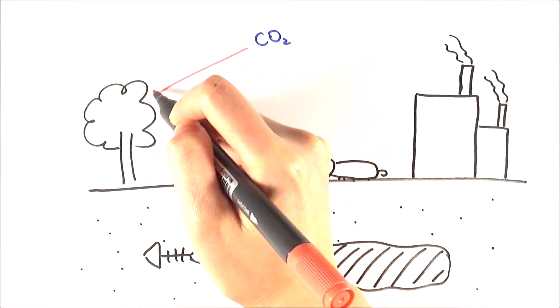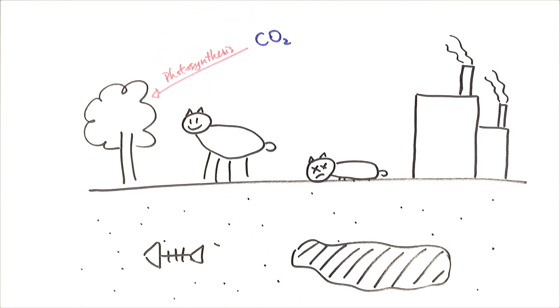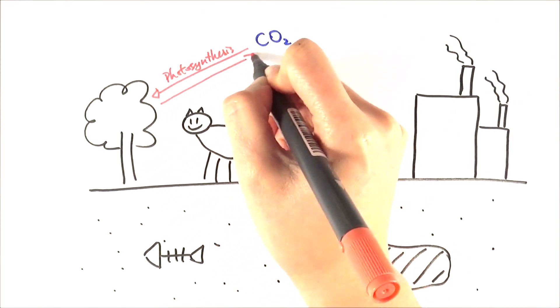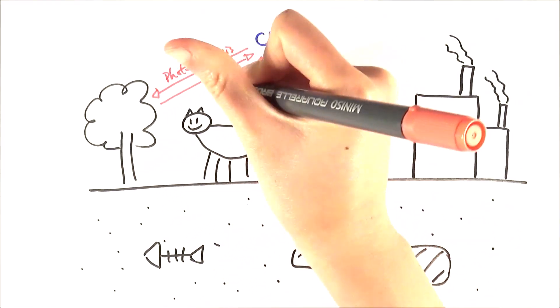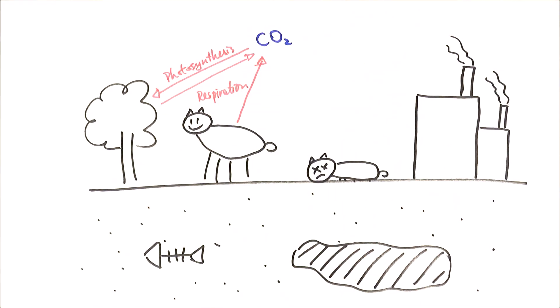Producers will take in carbon dioxide in the process of photosynthesis, because that's one of the materials needed for photosynthesis. But they also release carbon dioxide and so do the consumers, because they do respiration, taking in oxygen and releasing carbon dioxide in the process. That's how carbon fluctuates between the producers, consumers, and the atmosphere.